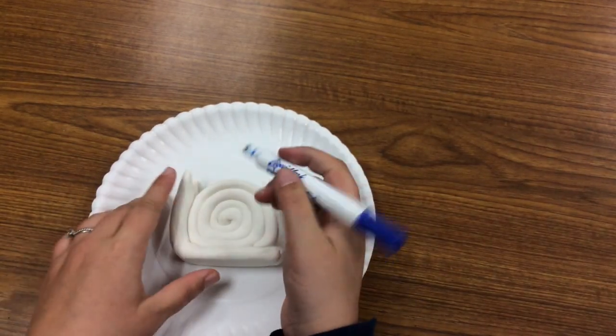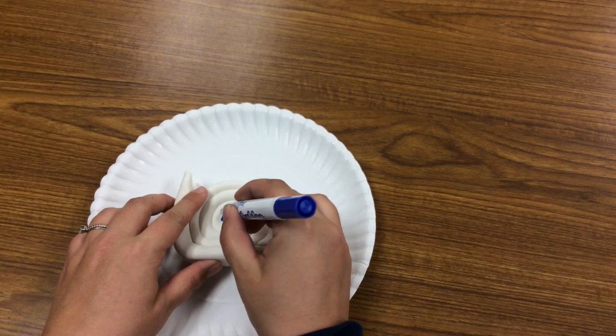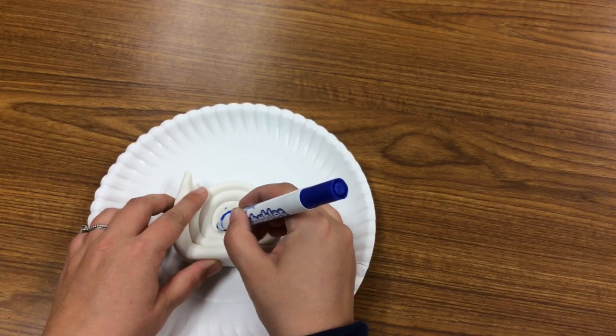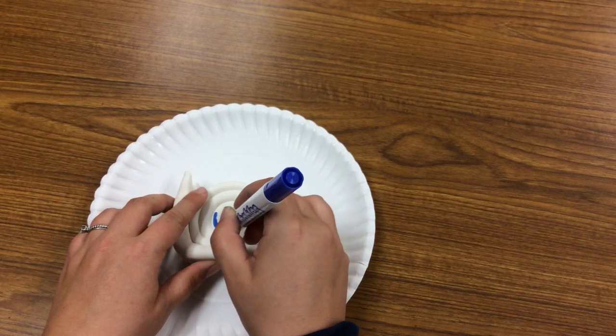To use the marker technique, you will simply draw onto your snail using your Crayola Washable Markers or any other type of washable markers.